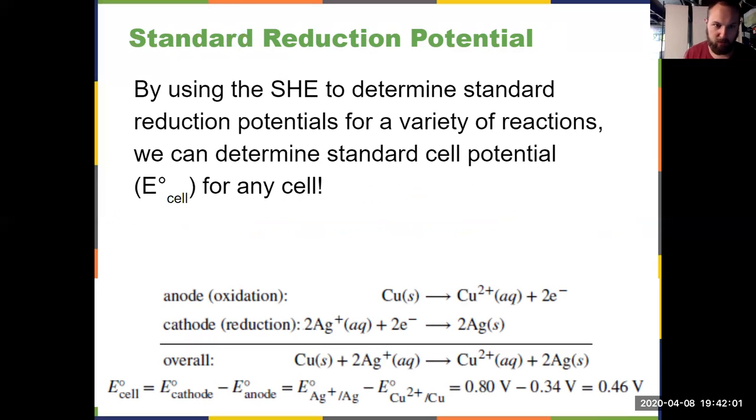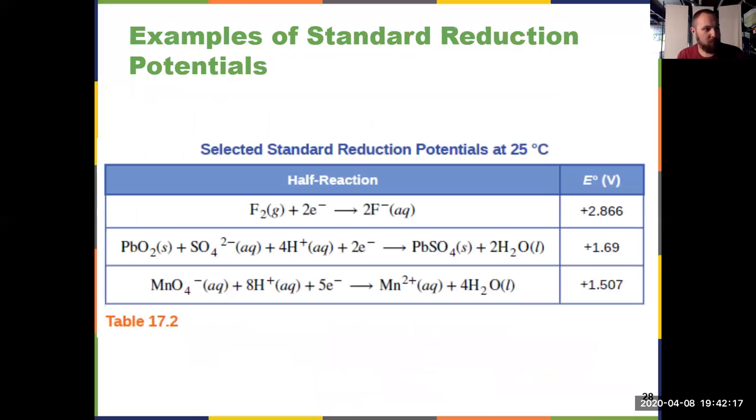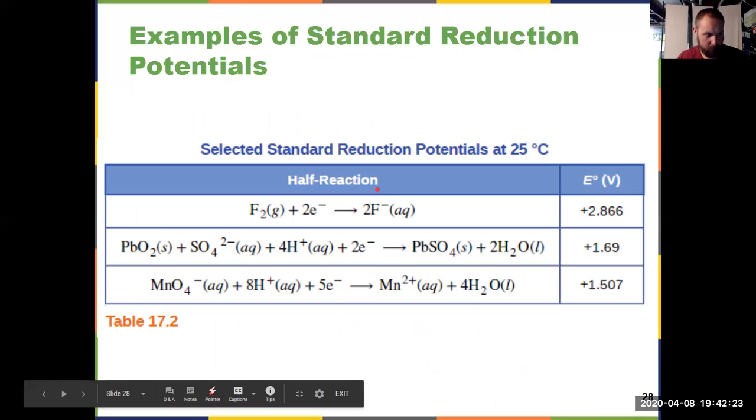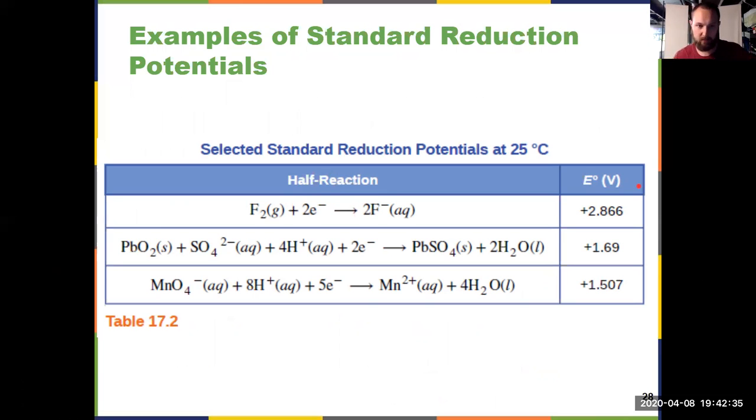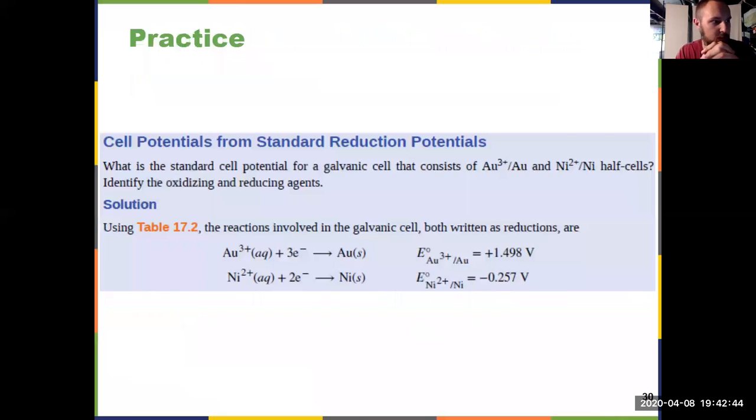We can determine the cell potential for any cell using that same manner. Keep in mind, the calculation E of the cell is always equal to E cathode minus E anode. You'll need to know how to do calculations with those reduction potentials. Here's an example of some reduction potentials - I see reduction of fluorine up top, reduction of manganese on the bottom, all with their corresponding values. That's information that will always be provided to you unless you're given E cell and asked to calculate one of them - you would never have to memorize those values.